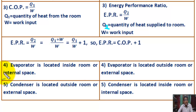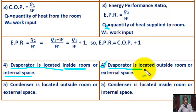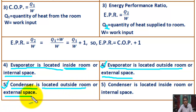Number four: in a refrigerator, the evaporator is located inside the room — that means internal space. In a heat pump, the evaporator is located outside the room — that means external space. Number five: in a refrigerator, the condenser is located outside the room — external space. In a heat pump, the condenser is located inside the room — internal space.